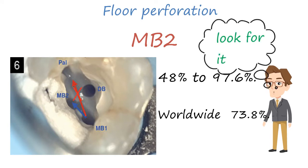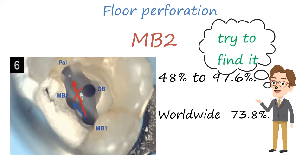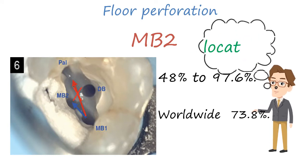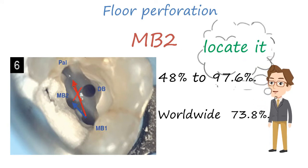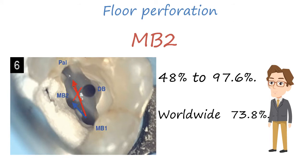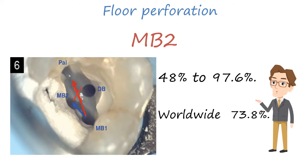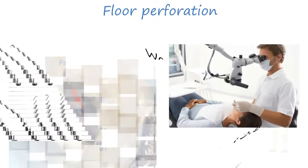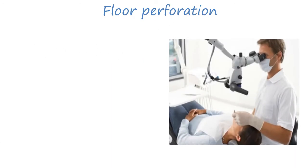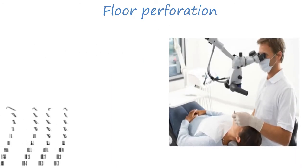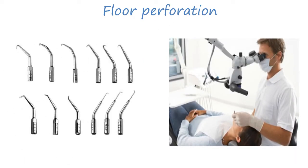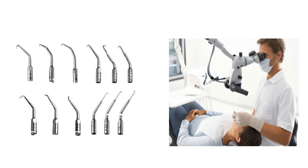You have to look for MB2, you have to try to find it, you have to use the known methods trying to locate it, but it's not always there. If you keep digging trying to get the canal, you might end up with this kind of perforation. Using magnification and ultrasonics in access cavity preparation and in finding the canals helps to avoid this kind of perforation.